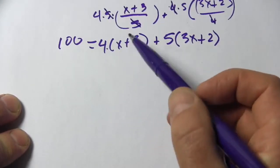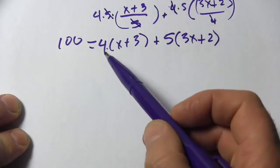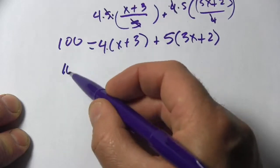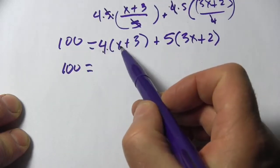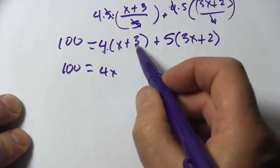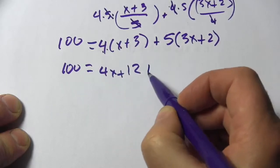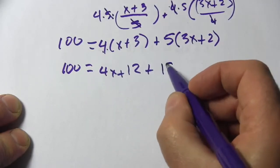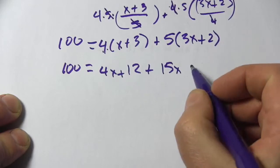Now, after we've gotten rid of the fractions, that's the first step. The second step, we've got some distribution to do. So we're going to distribute that 4 and that 5. 4 times x is 4x. 4 times 3 is 12. 5 times 3x is 15x. And 5 times 2 is 10.